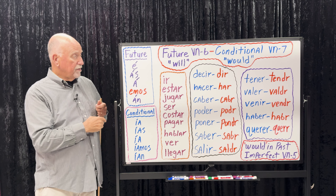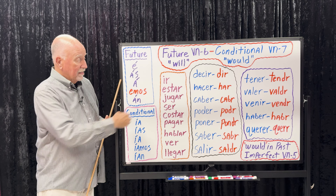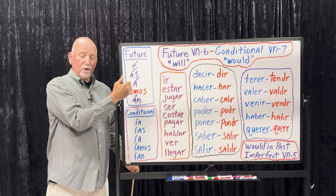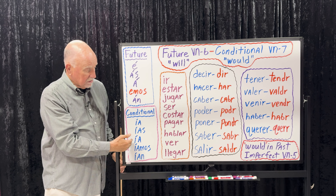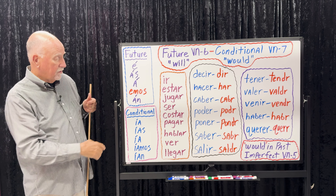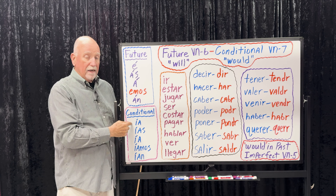You just take the infinitive, put it in front, and add the appropriate ending. And now for the conditional — let's do it. If you want to say 'I would go,' it's iría.